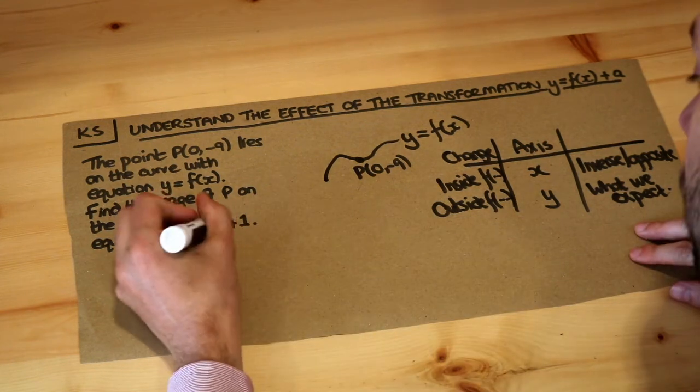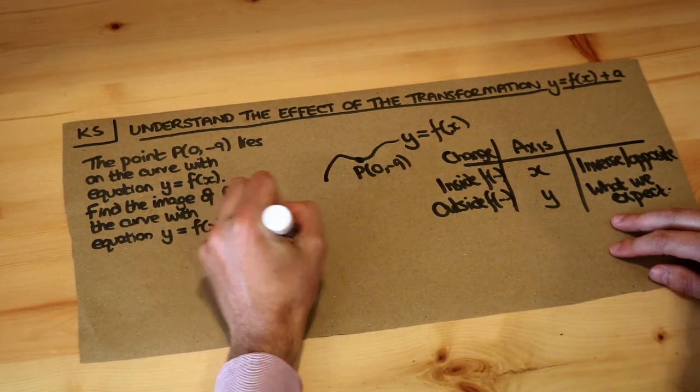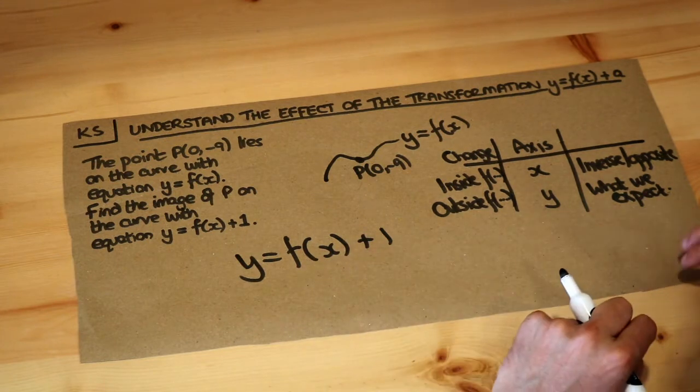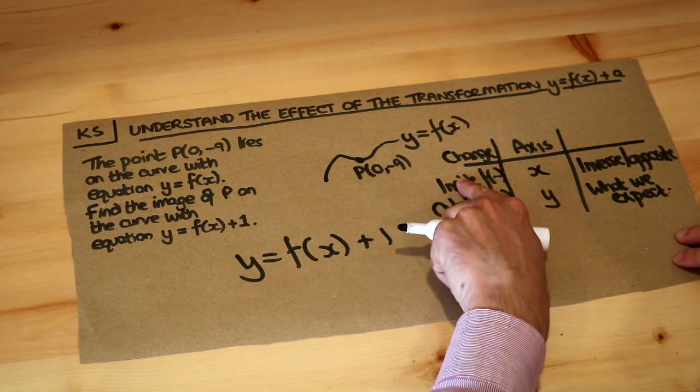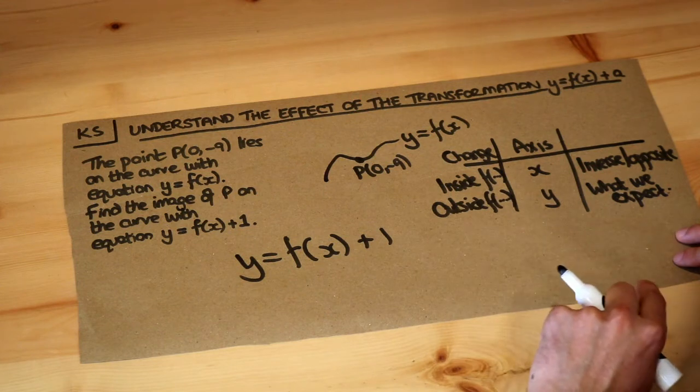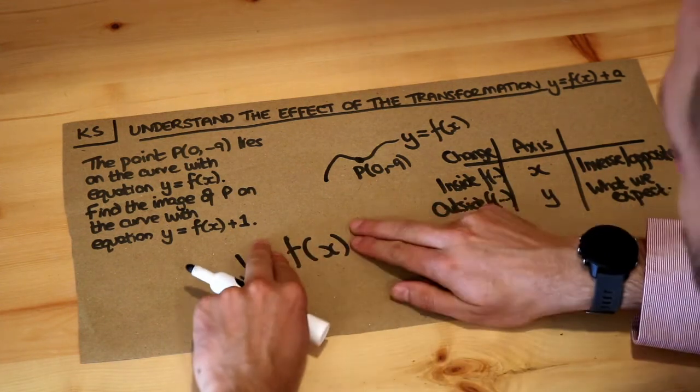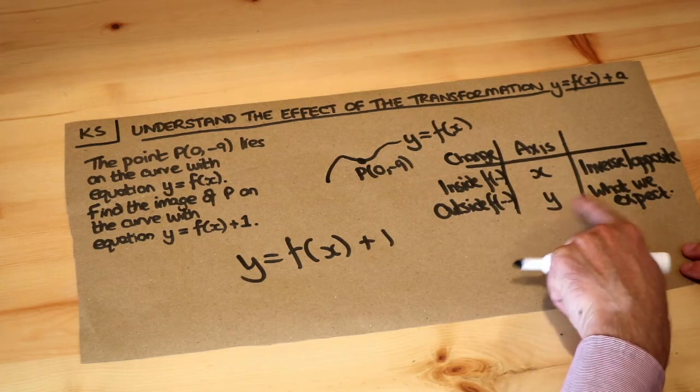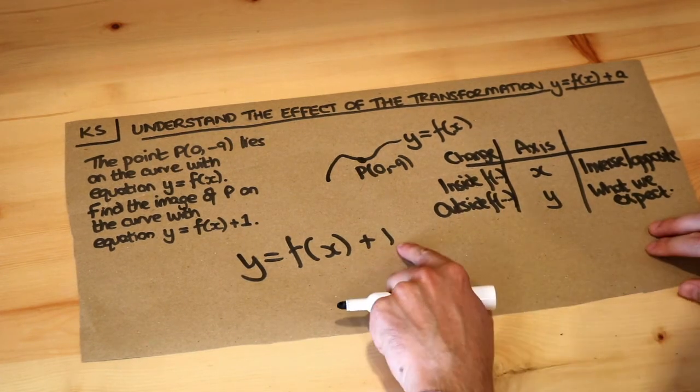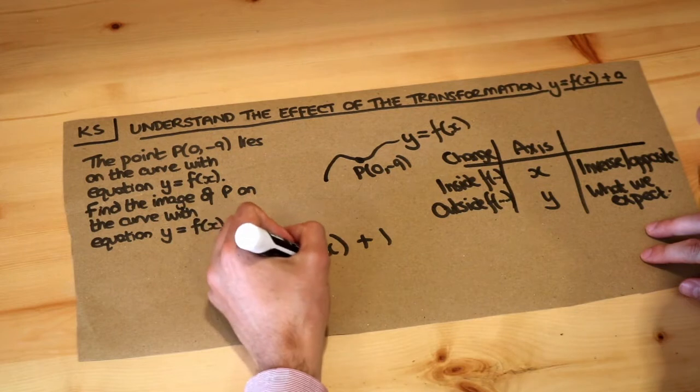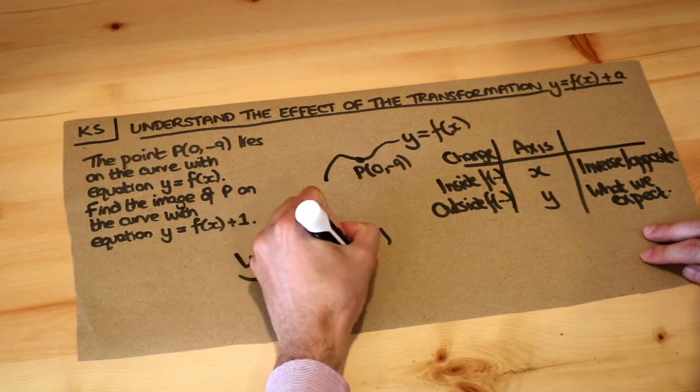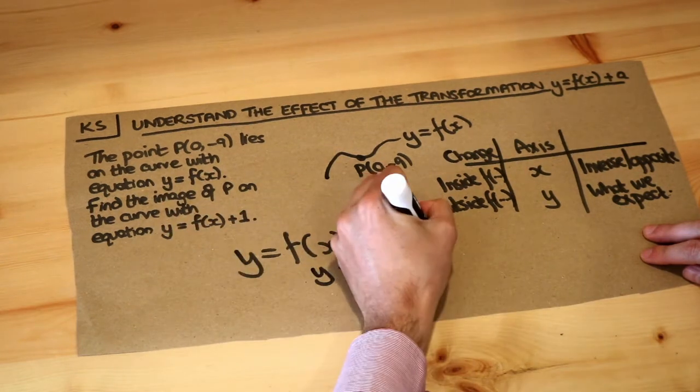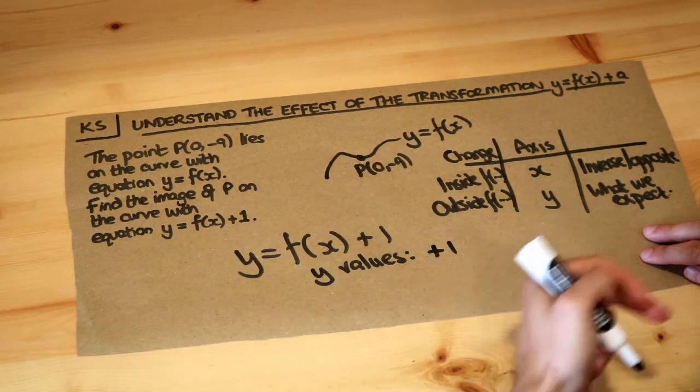Now let's write that big. We've started with y equals f of x. That plus 1 there is what the change is. Is that plus 1 inside the function or outside the function? Well clearly that plus 1 is outside this function f of x, so it's going to affect the y-axis and do what we expect. This plus 1 is going to affect the y values, and we're going to do what we expect. So if we've got the plus 1 there, we're going to plus 1 to the y values. We don't do the opposite, which would be to subtract 1.